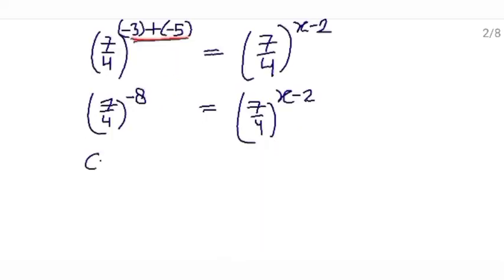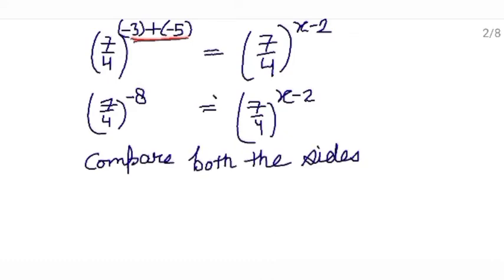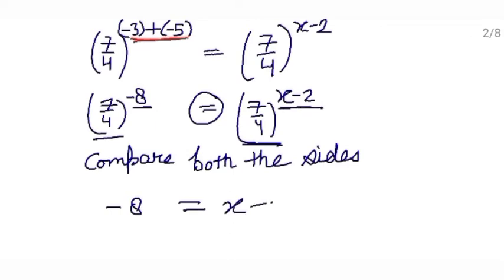Now compare both the sides. An equal sign is given in between, meaning both sides will be equal. If bases are same we can say that powers will be equal. So this exponent minus 8 will be equal to x minus 2. Now we have got the equation, and from this equation you can easily find the value of x.